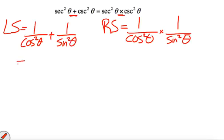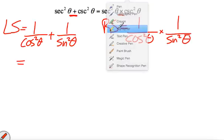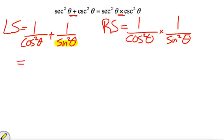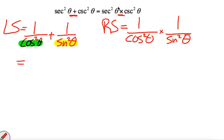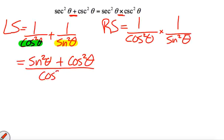We're pretty much crossing up here, so we're going to take the sine squared theta, and it's going to move up to the top of the left side. The cos squared theta is going to move up to the top of the right, so we're going to have now a common denominator, so we're going to have sine squared theta plus cos squared theta, all divided by cos squared times sine squared.